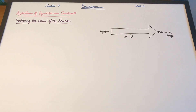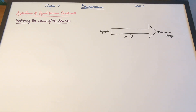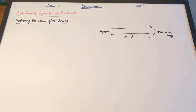In the previous video we talked about the various features of the equilibrium constants. In this one we are going to be talking about the application of equilibrium constants, and there are three: the first one is it predicts the extent of a reaction, the second is it predicts the direction of the reaction, and the third is it helps calculate the equilibrium concentrations.